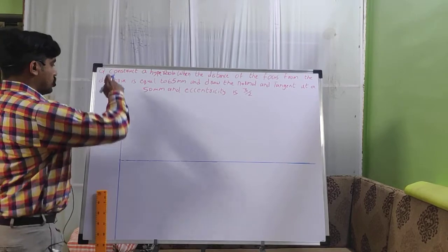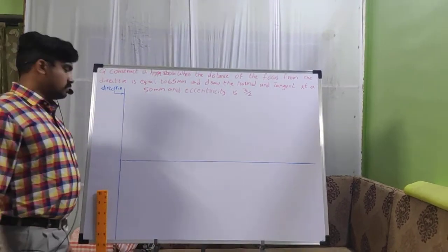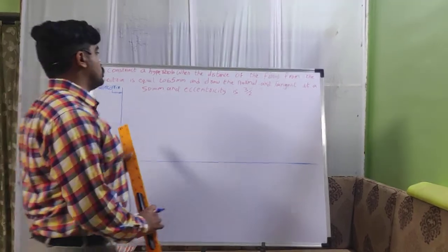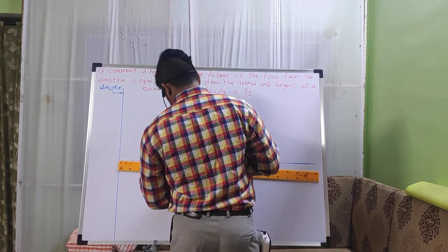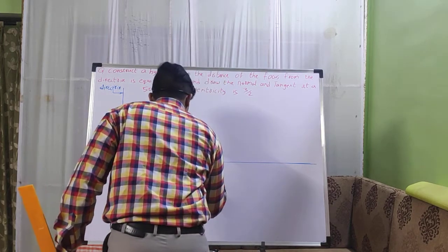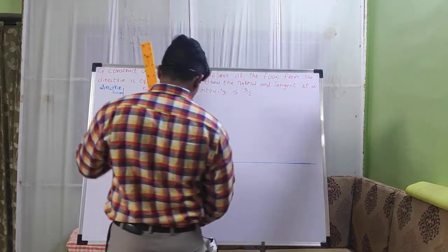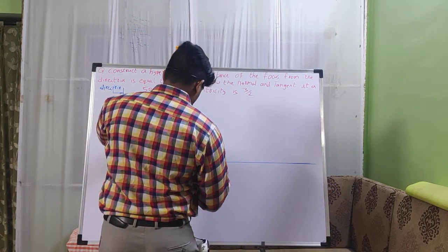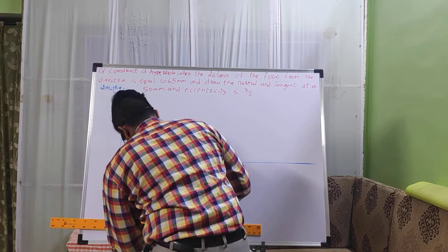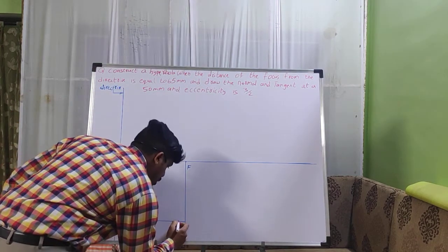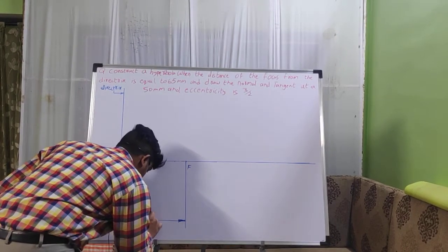First, we need to draw the vertical line — that is the directrix — and the horizontal line, that is the axis. Now we need to measure the distance of 65 mm in order to find out the focus point. Here we have got the focus point F. Mention the dimension here: it is about 65 mm.